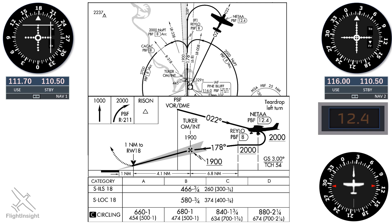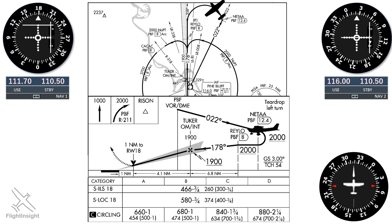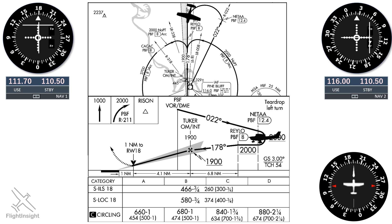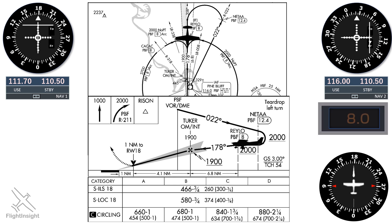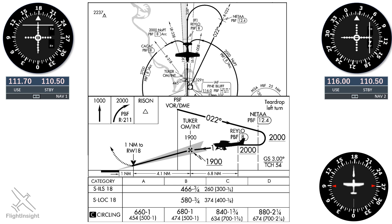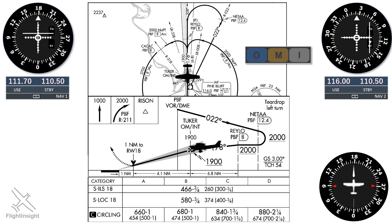We'll start a left turn to complete the procedure turn. Now, NETA is about 5 or 6 miles east of the localizer course, so a standard rate turn is going to put us significantly inside of the localizer. We could do a half standard rate turn, and in a slower aircraft, we may want to stop the turn at about a 30-degree angle to intercept the localizer — as long as we intercept outside of RAYLO at 4 DME. It's at that point we can come down to 1,900 feet, and again we'll be looking for glide slope intercept. When we get it, we'll follow the guidance down to the decision altitude, 466 feet.